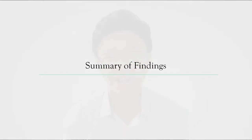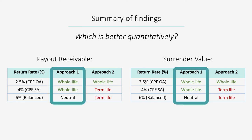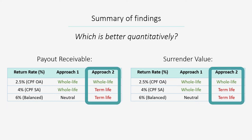In summary: for Approach 1, unless your return rate exceeds 6% per year, a whole life plan would be quantitatively better than the buy term, invest the rest approach. For Approach 2, which is the more common one, a buy term, invest the rest approach would be quantitatively better than the whole life plan if you can achieve a return of 4% per year.